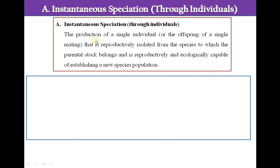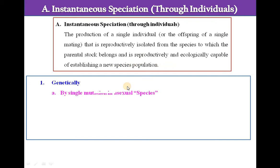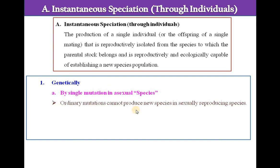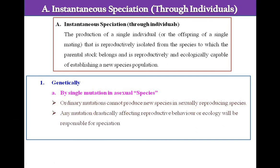Instantaneous speciation is the production of a single individual that is reproductively isolated from the species to which the parental stock belongs, and is reproductively and ecologically capable of establishing a new species population. It can occur genetically by a single mutation in asexual species. Ordinary mutation cannot produce new species in sexually reproducing organisms. Any mutation drastically affecting reproductive behavior or ecology will be responsible for speciation by single mutation.